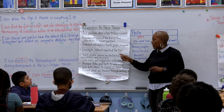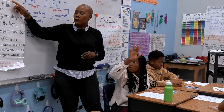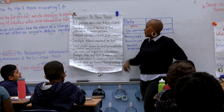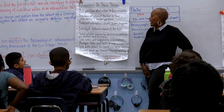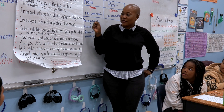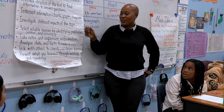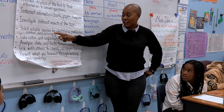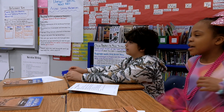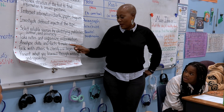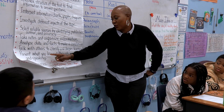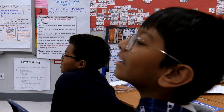So let's take a look at what some of those things are on the chart. What is one thing researchers do? Ask questions about a topic of focused research. Determine the structure of the text to find information to answer questions. Interpret information using class diagrams. Investigate different aspects of the topic. Select reliable sources by identifying publisher, author, and advocacy. Take notes and organize information. Analyze data and facts to make conclusions. Talk with others to clarify and deepen your learning. Present what you learned. Cite your sources.